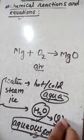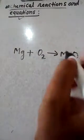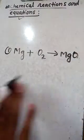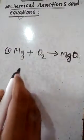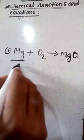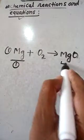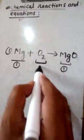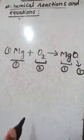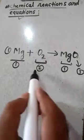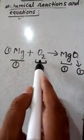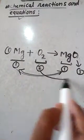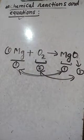Now let us look at the equation Mg + O2 → MgO and determine if it is balanced or unbalanced. On the reactant side, the number of magnesium atoms is 1, and on the product side it is also 1. But on the reactant side the number of oxygen atoms is 2, and on the product side it is 1. So magnesium is balanced but oxygen is not, making this an unbalanced chemical equation.